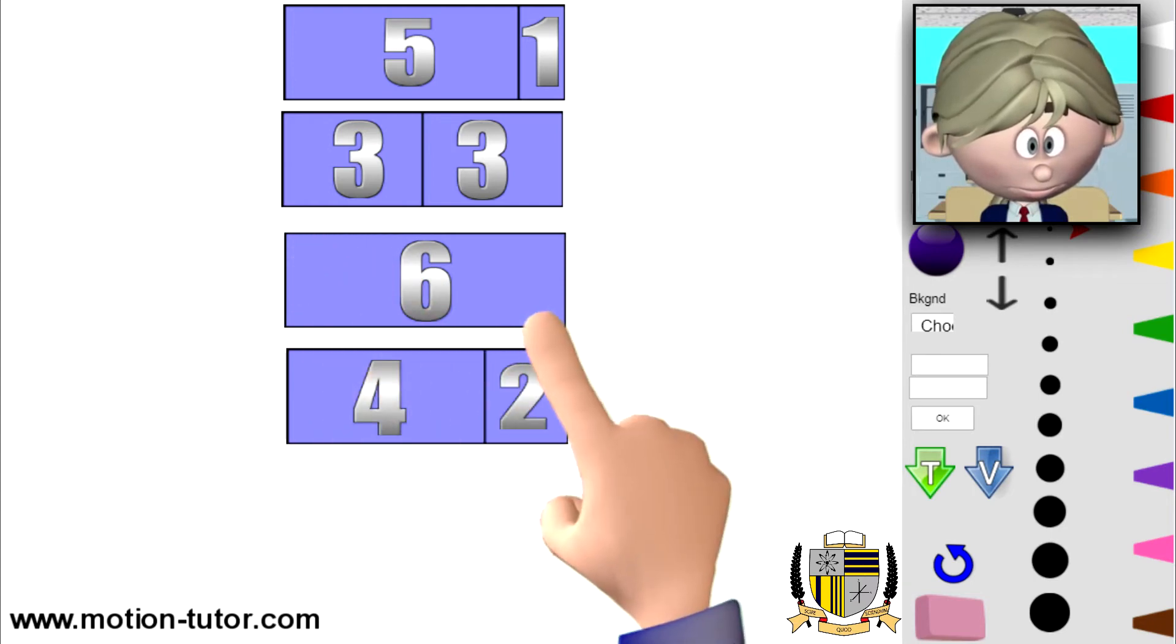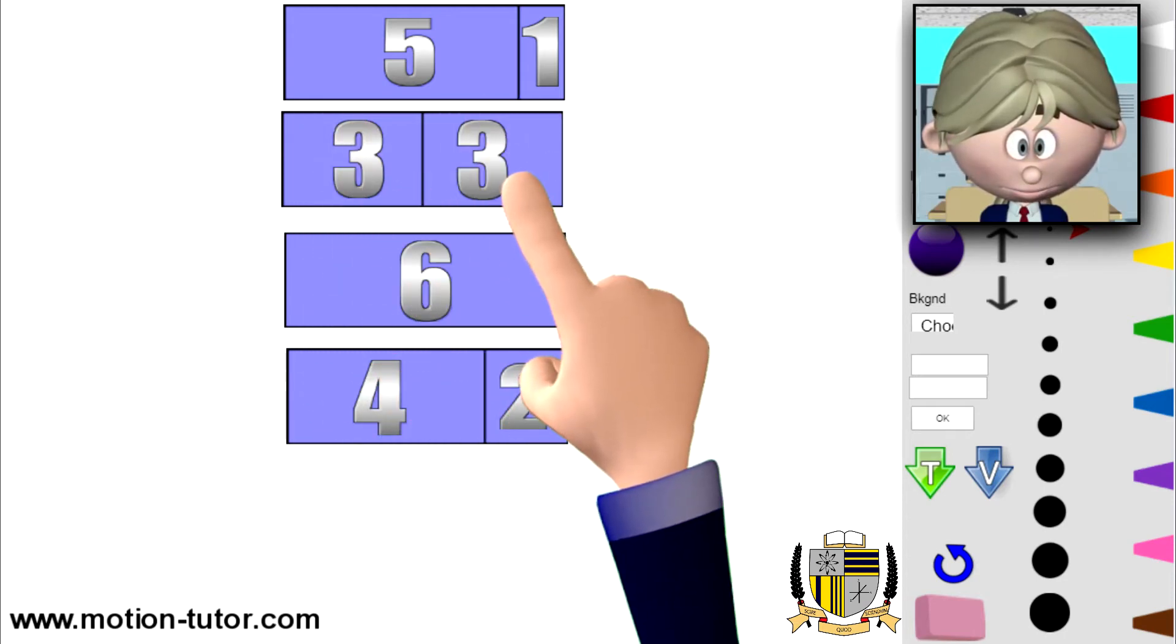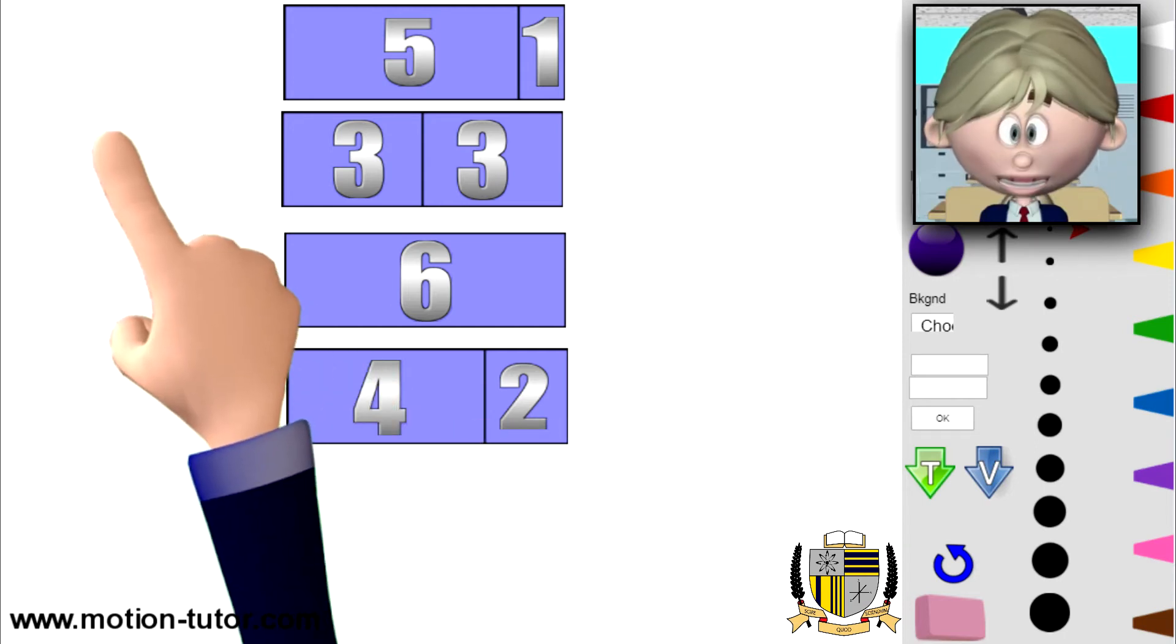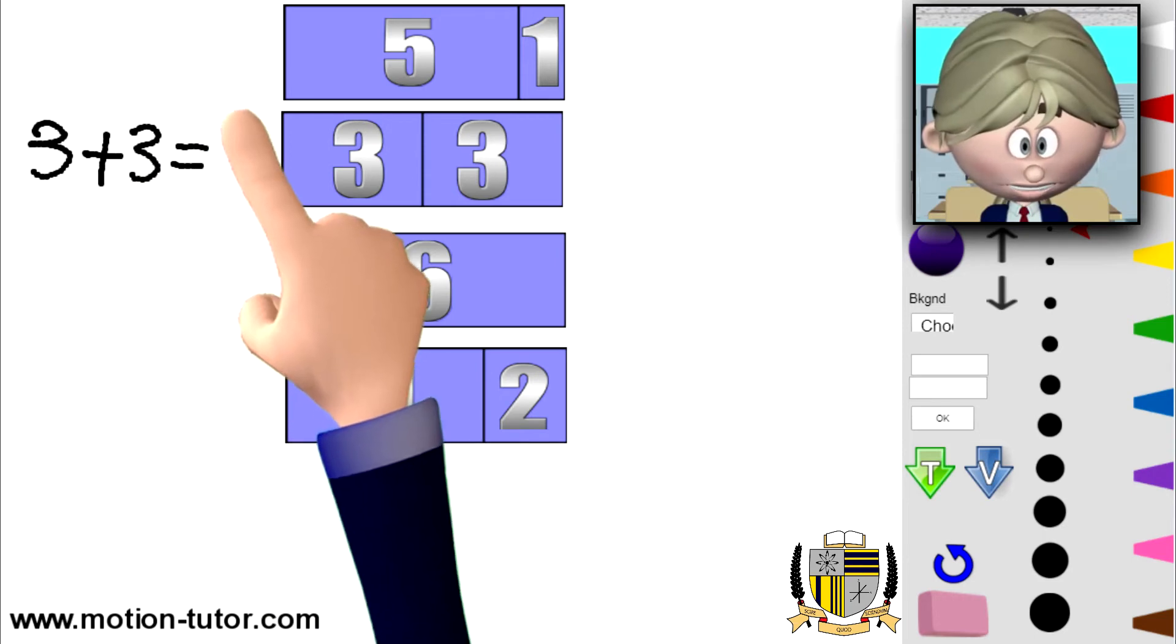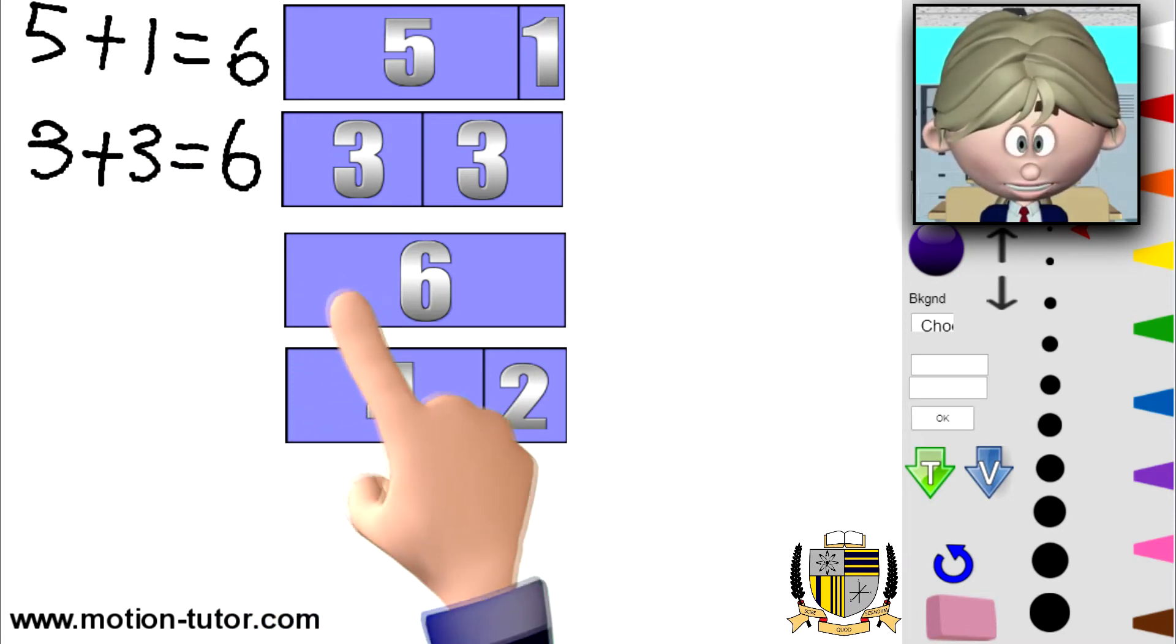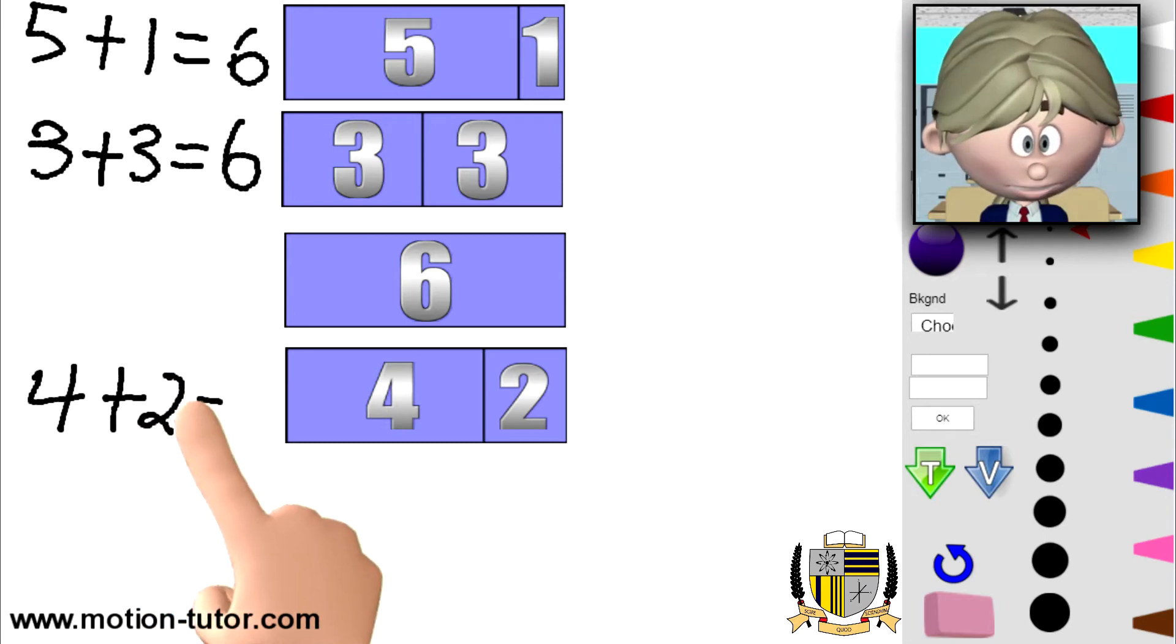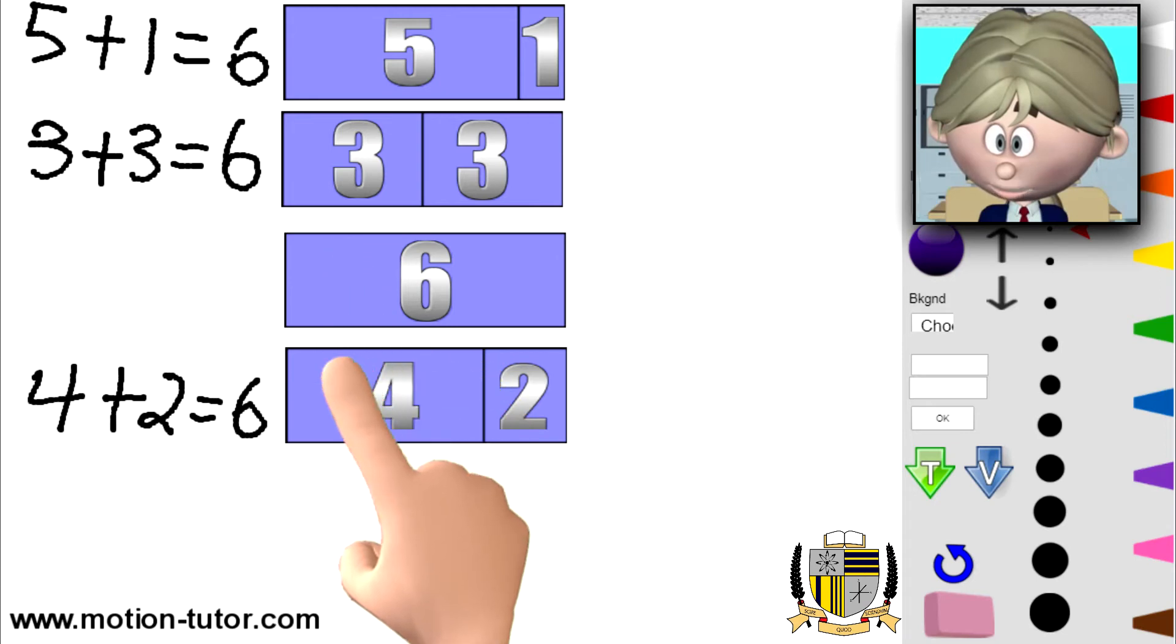So this whole six is represented here as a three and three, represented here as a five and one, represented here as a four and two. Three plus three is equal to six. Five plus one is equal to six. Four plus two is also equal to six. So you can see this one bar can be broken into pieces and shown the individual pieces.